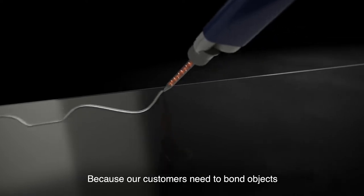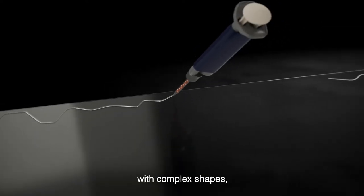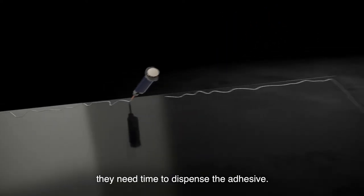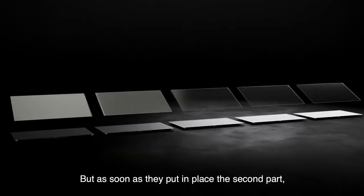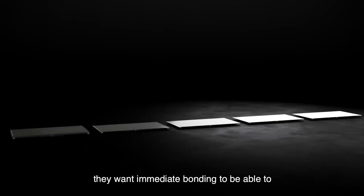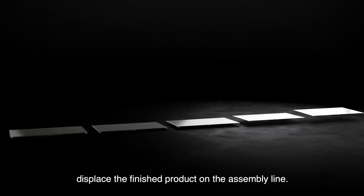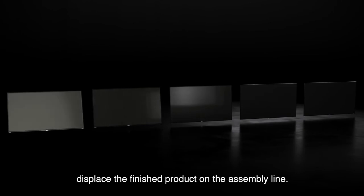Because our customers need to bond objects with complex shapes, they need time to dispense the adhesive. But as soon as they put in place the second part, the cover for example, they want immediate bonding to be able to displace the finished product on the assembly line.